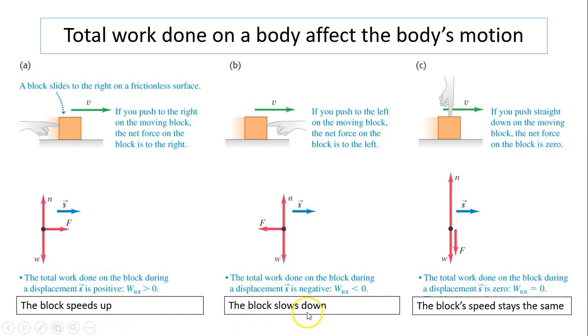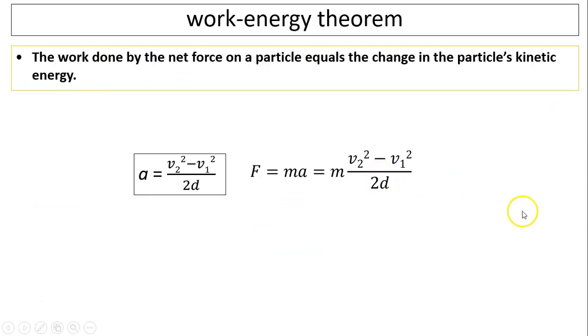If the speed slows down, its kinetic energy goes down. If its speed doesn't change, its kinetic energy remains the same. So the total work done affects its kinetic energy, or change in kinetic energy. And this is work energy theorem.